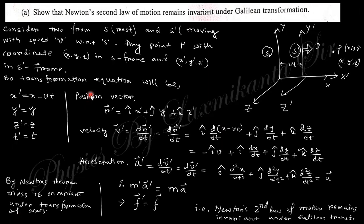The first question says: show that Newton's second law of motion remains invariant under Galilean transformation. This is a previous year question — if you already watched the 2018 previous year session, this was discussed there as well. We will discuss it again here.